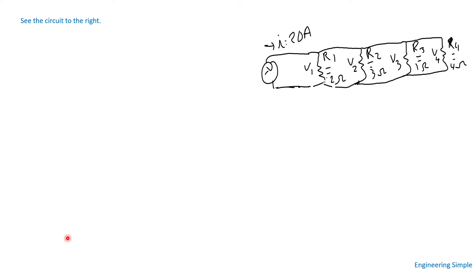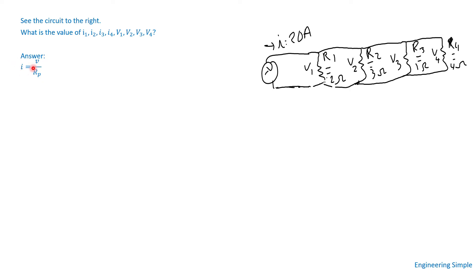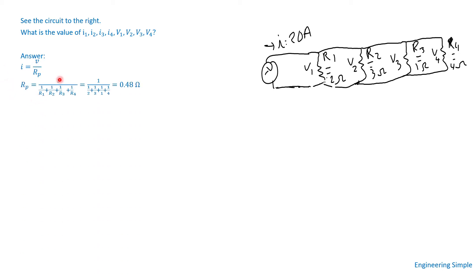Here's an example. We have a circuit where the total current is 20 amps, R1 is 2 ohms, R2 is 3 ohms, R3 is 1 ohm, and R4 is 4 ohms. We need to calculate the current through each resistance and the voltage across each one. The equivalent parallel resistance is 1 over (1/R1 + 1/R2 + 1/R3 + 1/R4), which gives Rp equals 0.48 ohms.